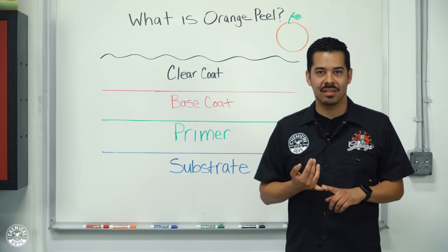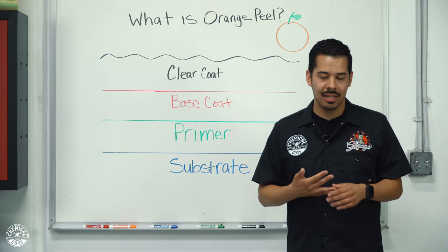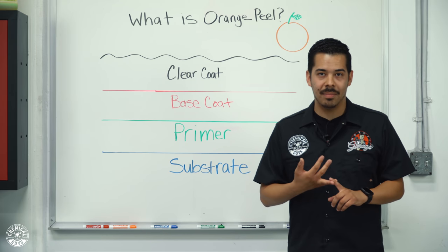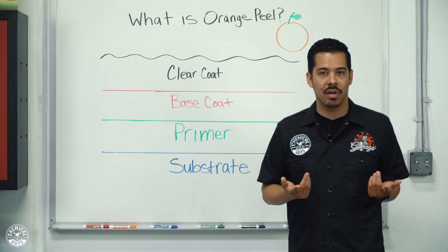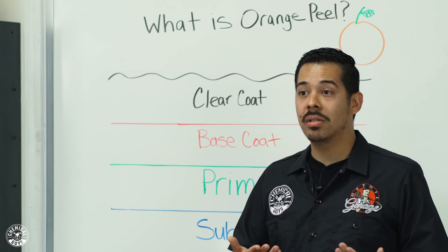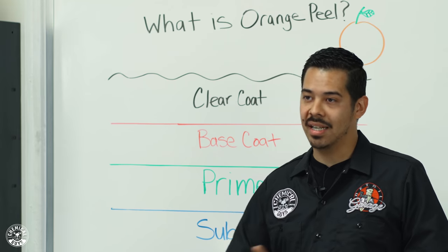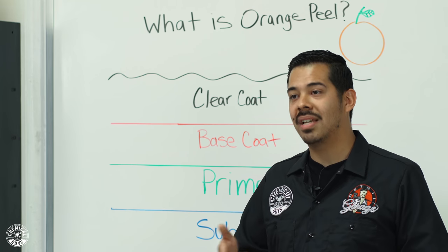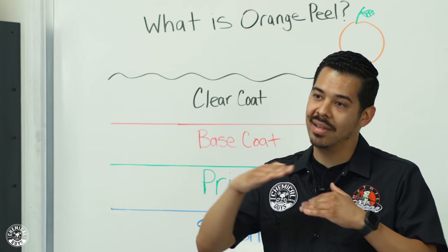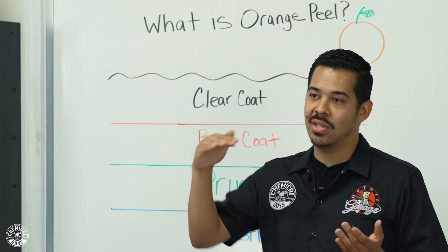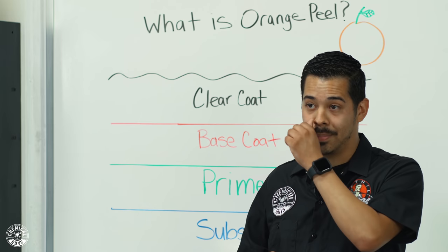Orange peel can come from a variety of things. It can be improper spray technique. The settings on the fan of the gun may have been misplaced, or maybe it was too wide, or maybe they were just spraying too much product. What it could also be is maybe when they were spraying their second coat, they didn't allow enough time for the first coat to settle. And now it's getting a lot of solvent pop, which is causing the clear coat to dry unevenly. So that's why you end up getting like that wavy look on your paint.